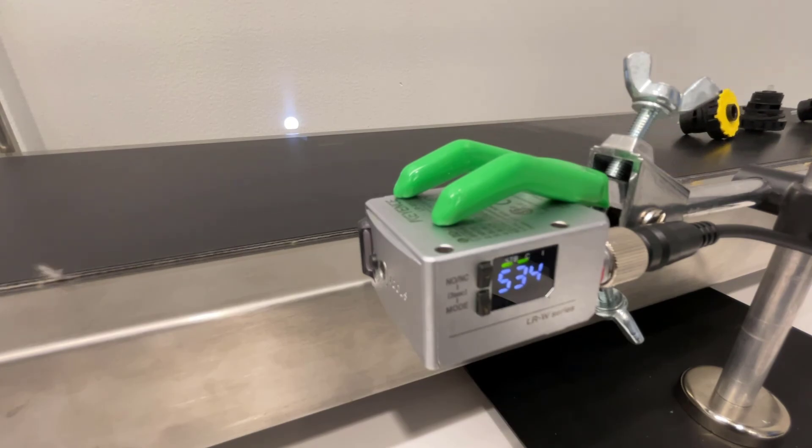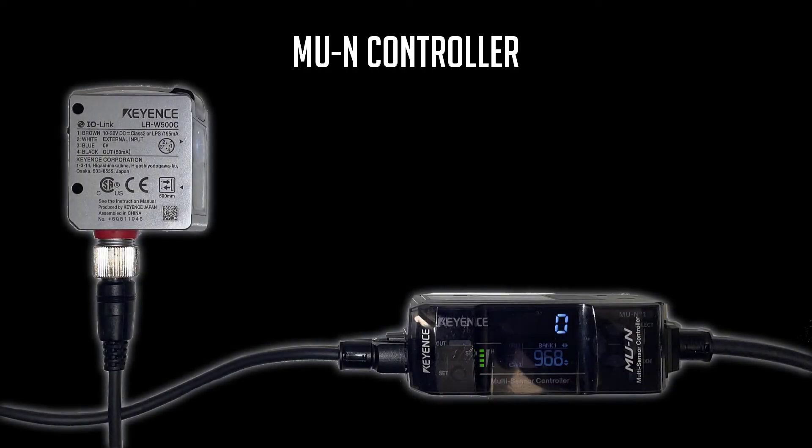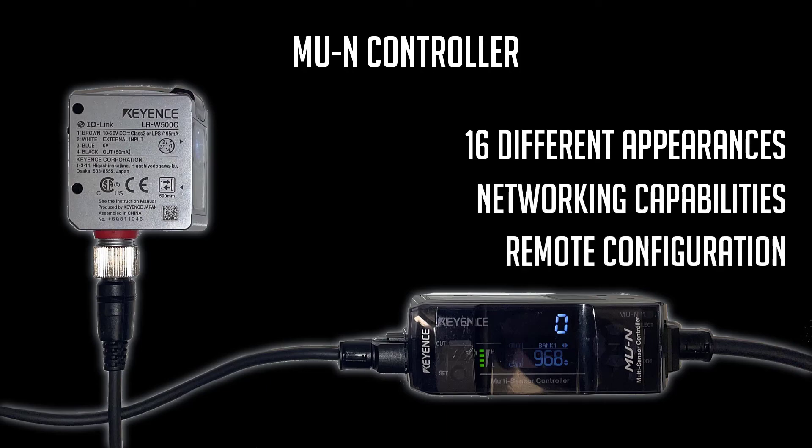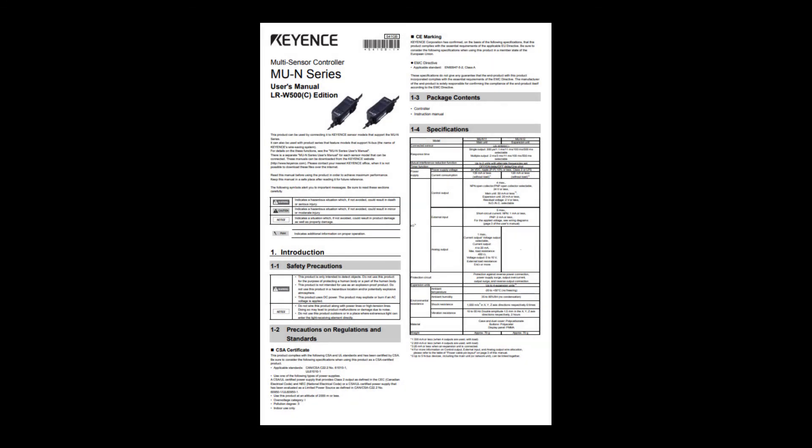In some applications, it may be necessary to use the MUN controller in conjunction with the LRW. This controller allows you to detect up to 16 unique appearances, along with some additional functionality. Reach out to your local Keyence representative to get more information about this controller.